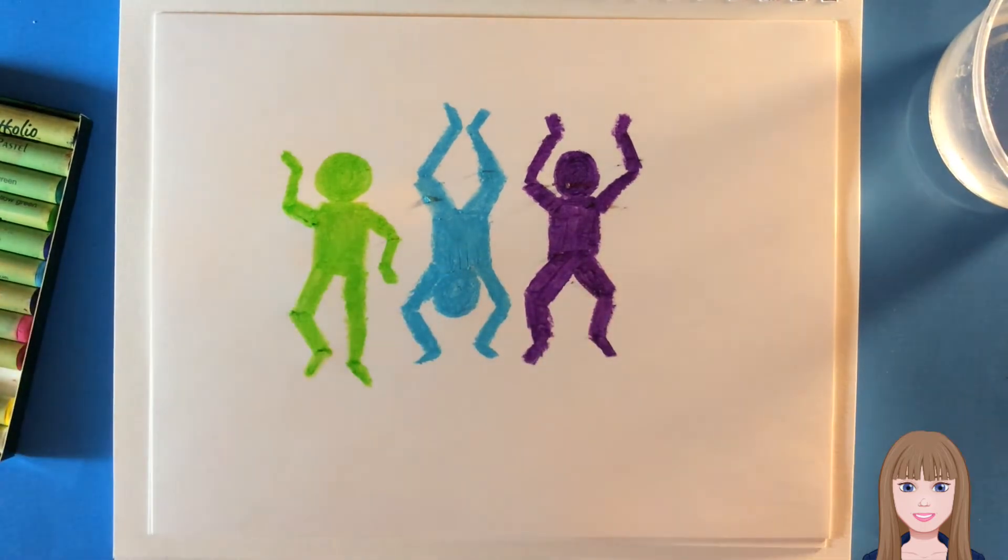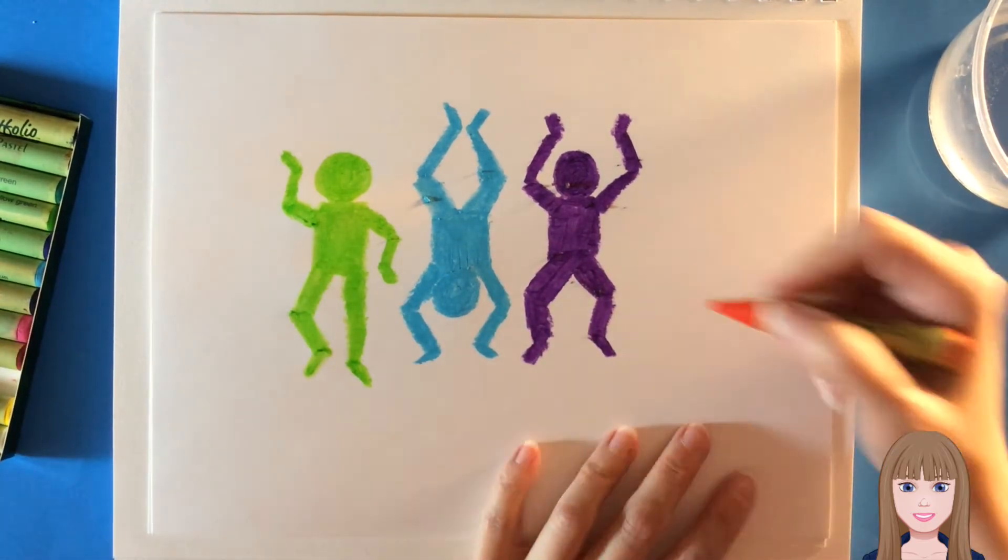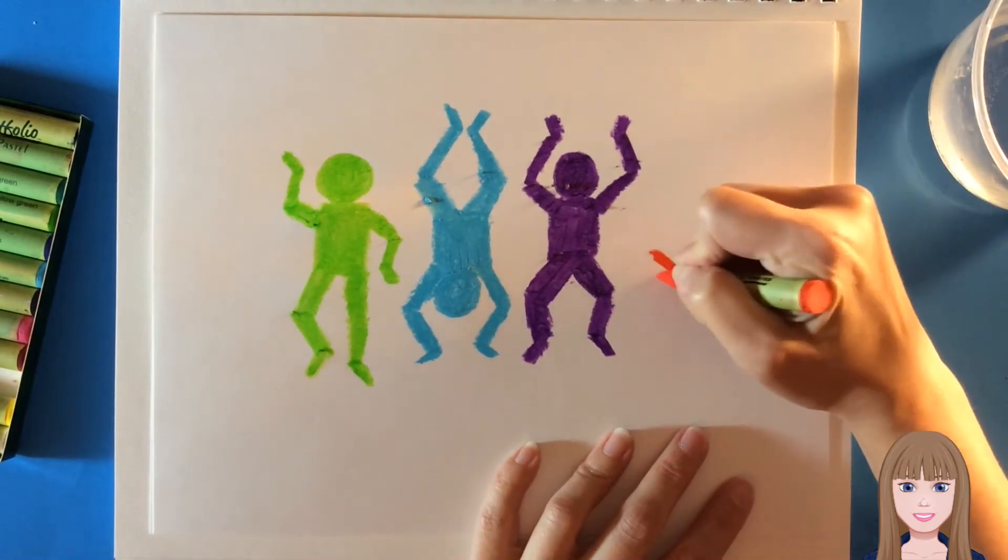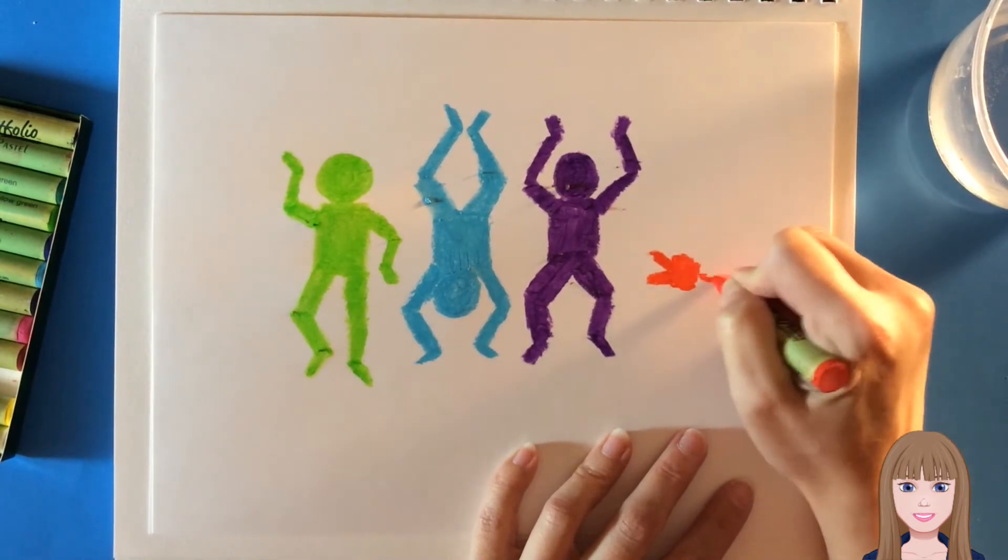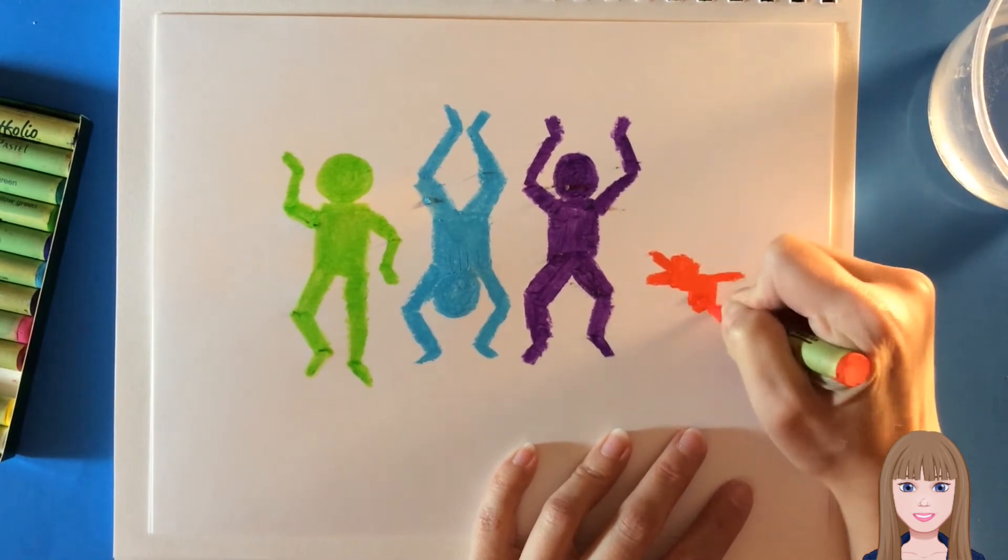Keith Haring also made images of dogs, so there could be a barking dog figure.